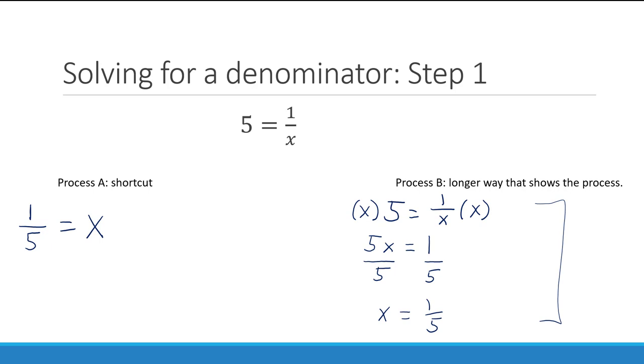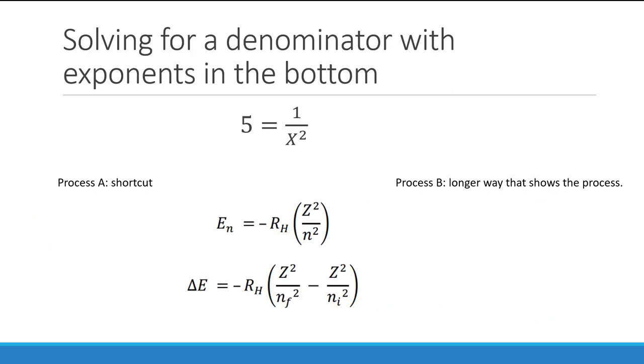Let's add one step to this. This is a very common step that comes up in many places but specifically in solving quantum mechanical problems. For instance, in these two equations you'll be seeing quite a bit of in your first couple of weeks in chemistry. Often you'll be solving for n, so you can see where this concept is going to come up. But for now, let's stick with the version I have above: 5 equals 1 over x squared. Similar to the last time, we'll do this using both the shortcut and the example where we show how the shortcut works.